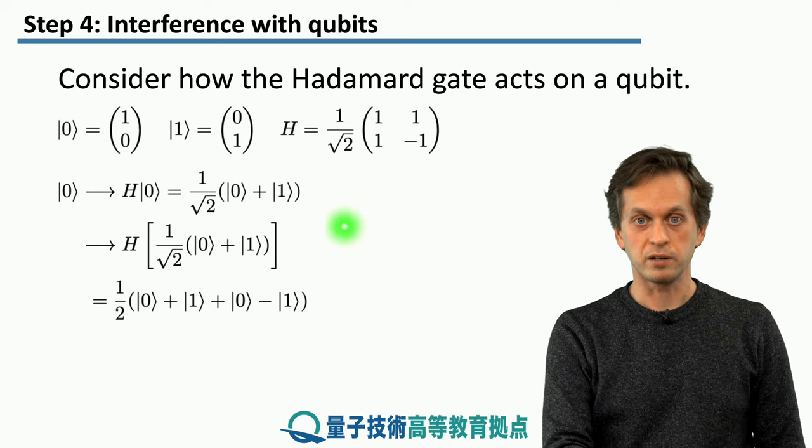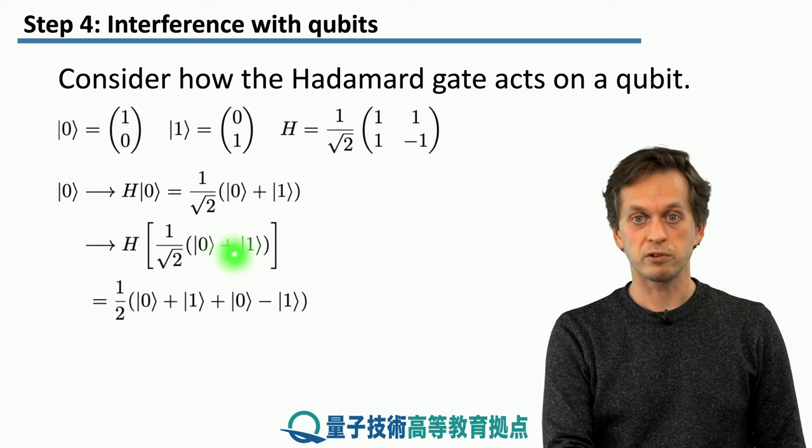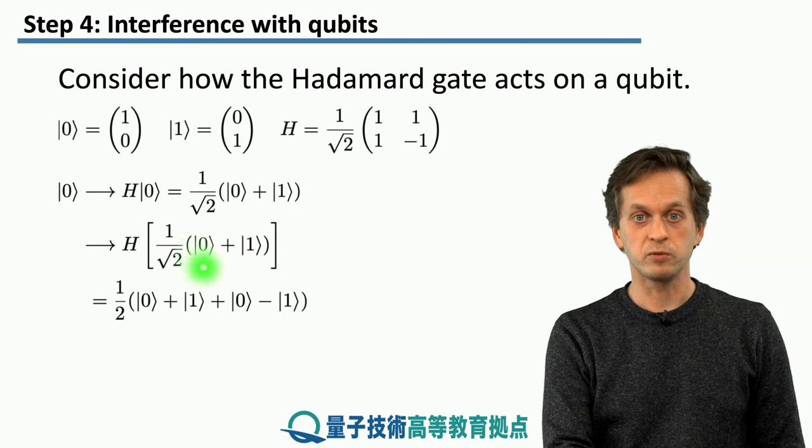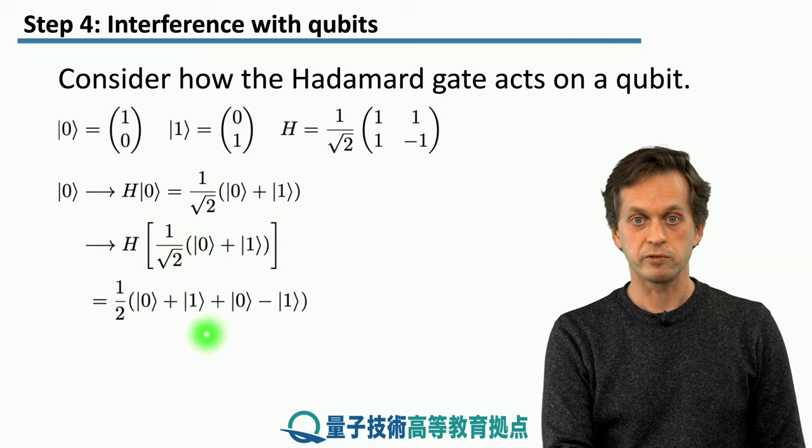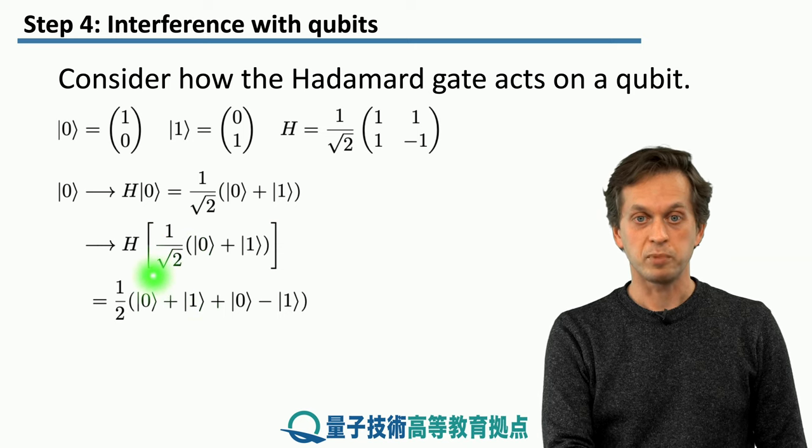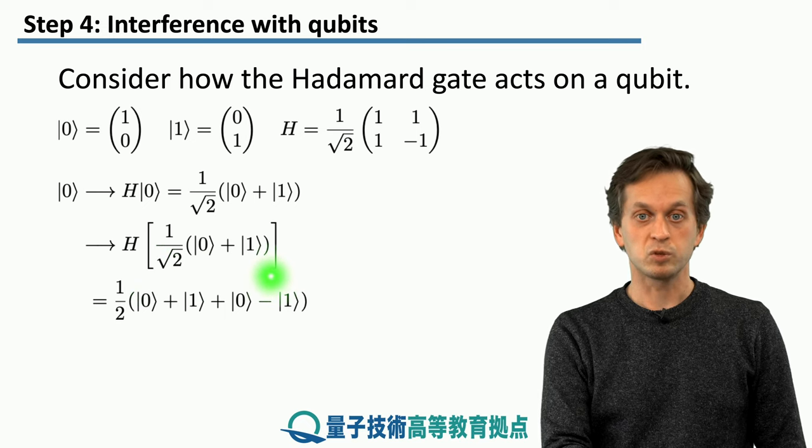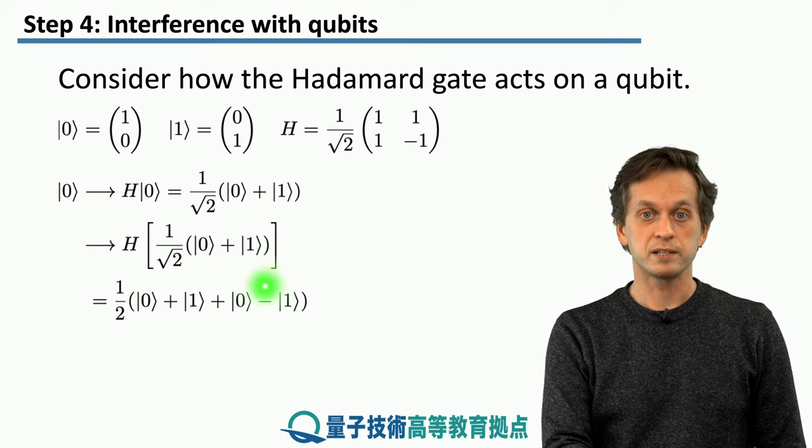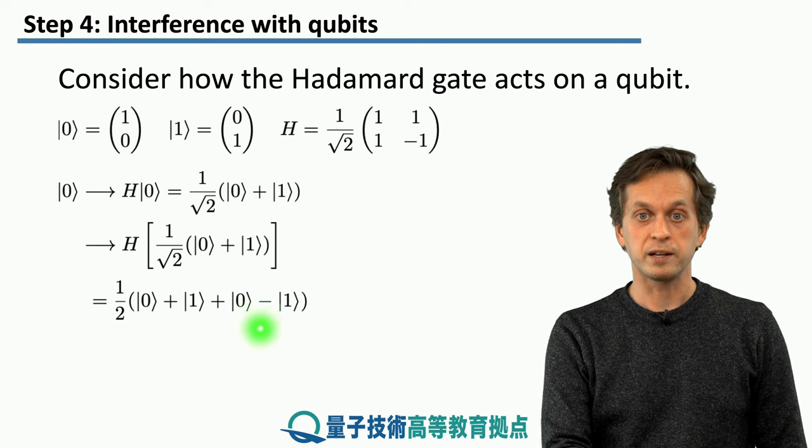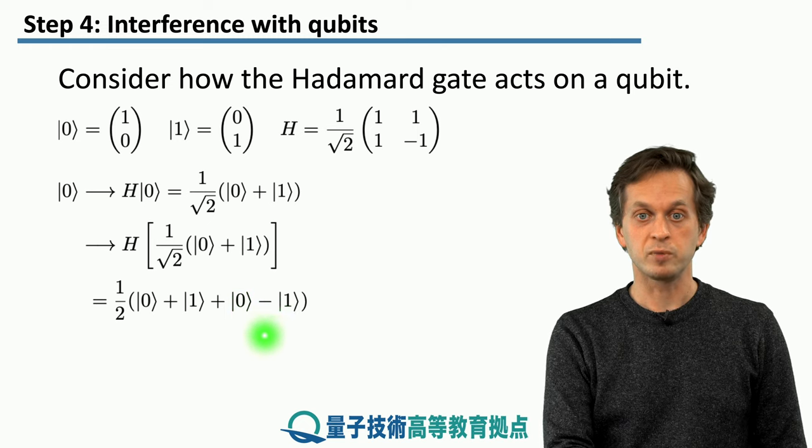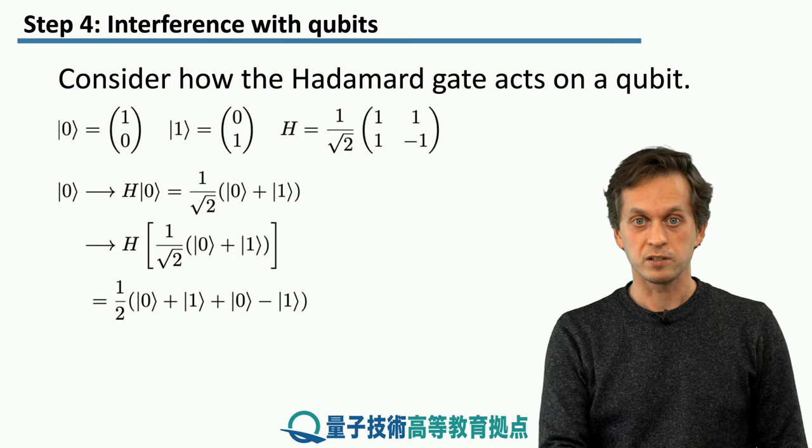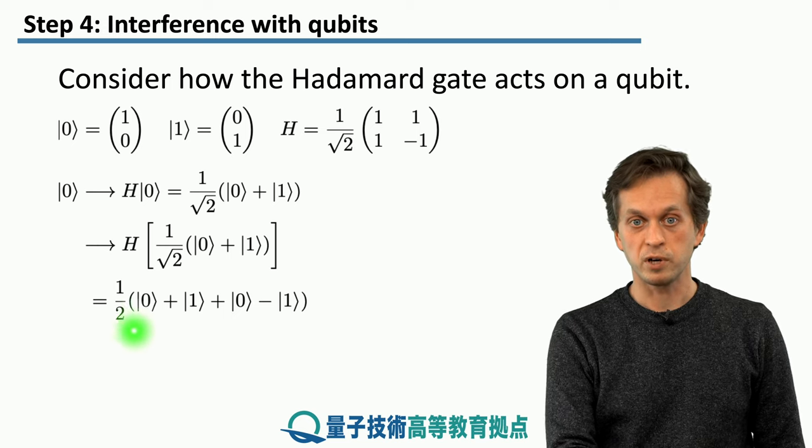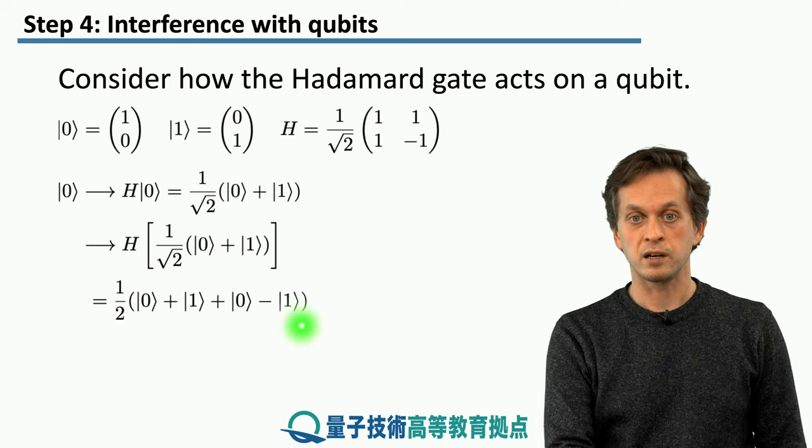Applying the Hadamard to the state 0 creates another superposition of 0 and 1. Over here. 0 plus 1. And applying Hadamard gate to the state 1 creates a superposition of 0 and 1, but this time with the 1 having a minus probability amplitude in front of it. So, after applications of two Hadamard gates, this is our state.